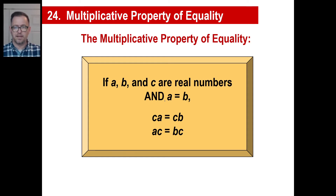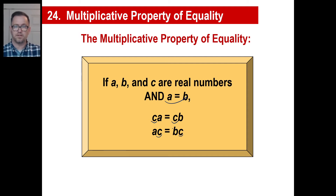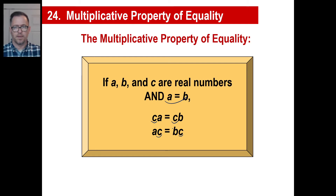If A is the same thing as B, then if you multiply C by A, it's going to be equal to C times B. Or if A is equal to B, if you multiply it this way, of course it doesn't matter what order you multiply things in — 7 times 9 is the same thing as 9 times 7.